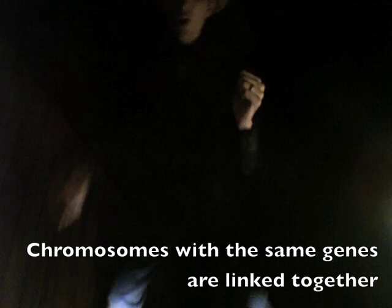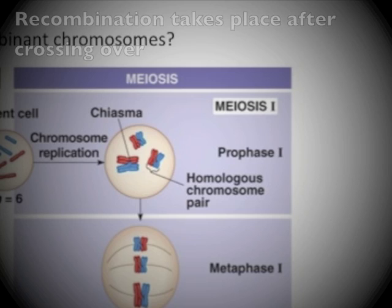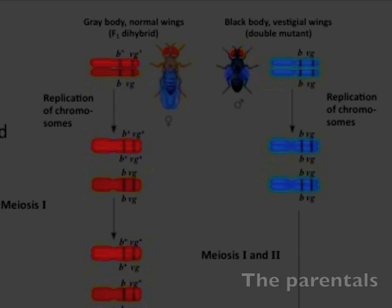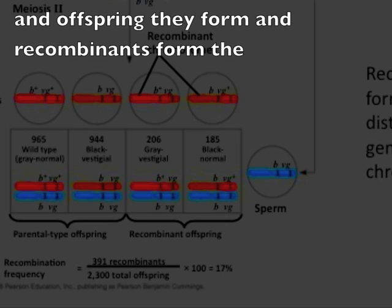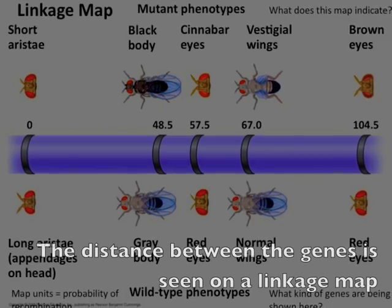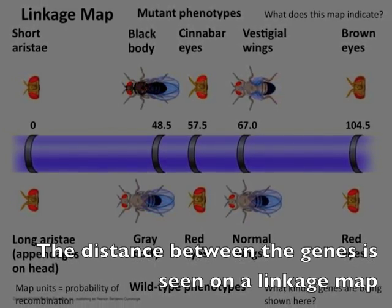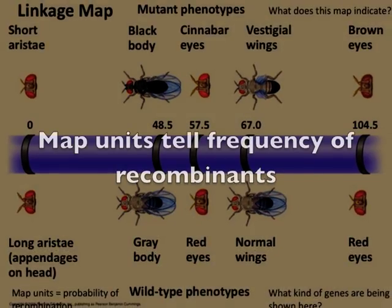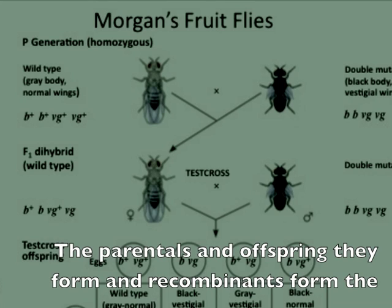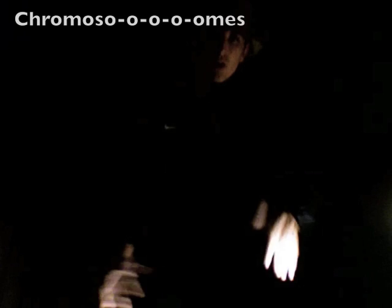Chromosomes with the same genes are linked together. Recombination takes place after crossing over. The parentals, offspring they form, and recombinants form the chromosomes. The distance between the genes is seen on a linkage map; map units tell frequency of recombinants. The parentals, all things they form, and recombinants form the chromosomes.